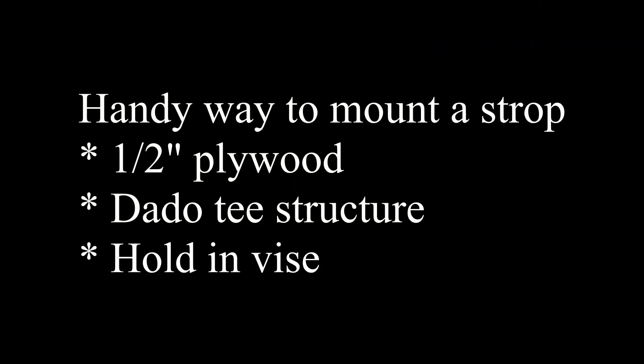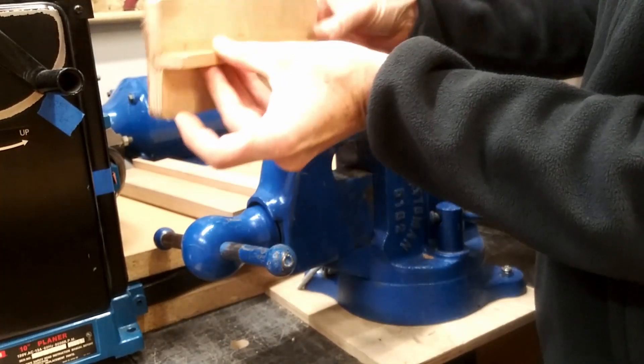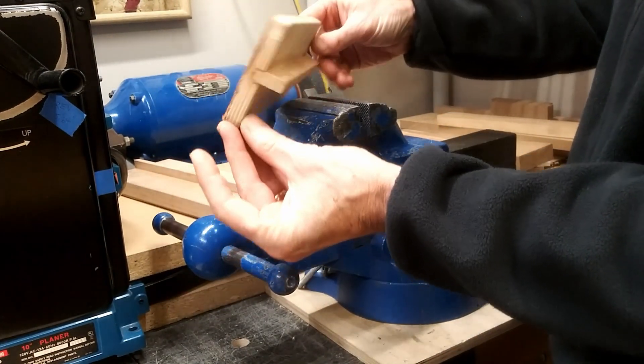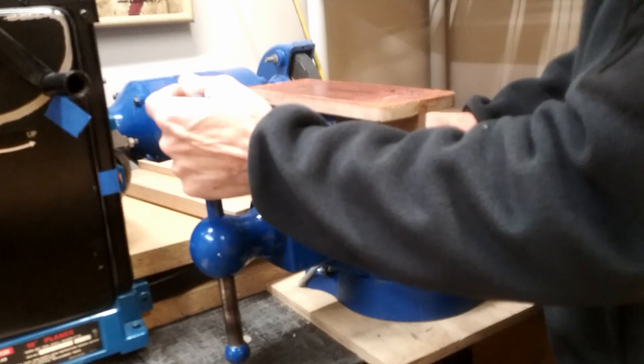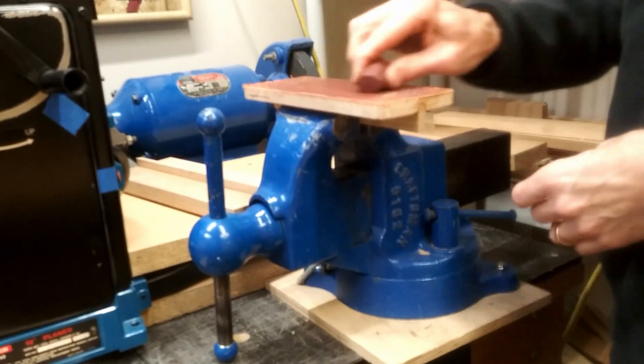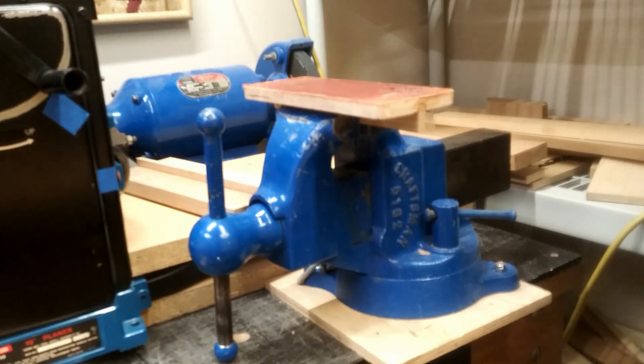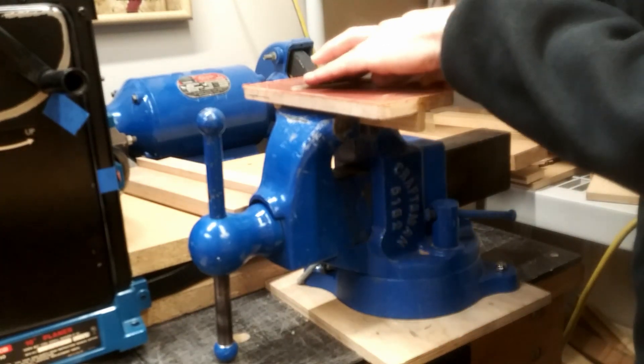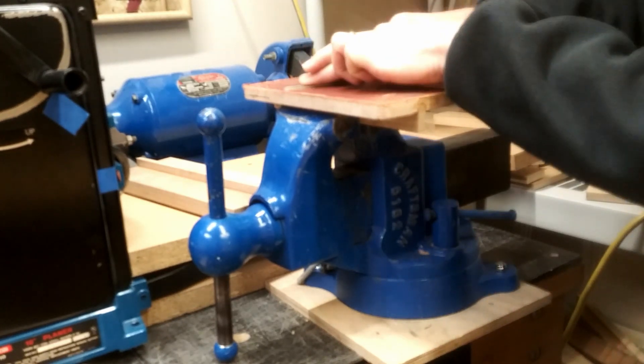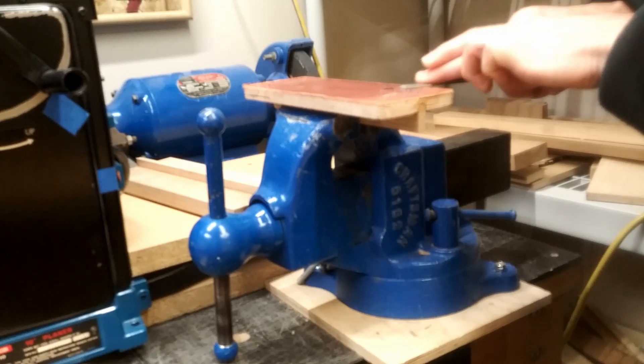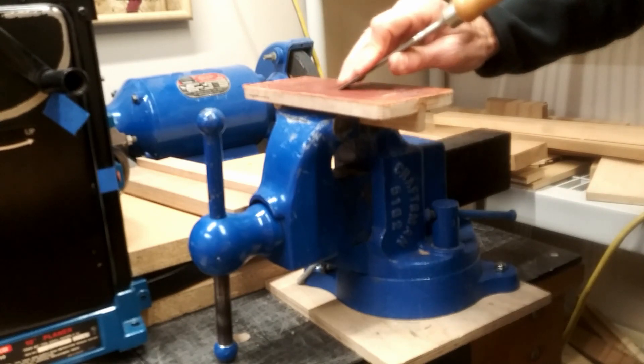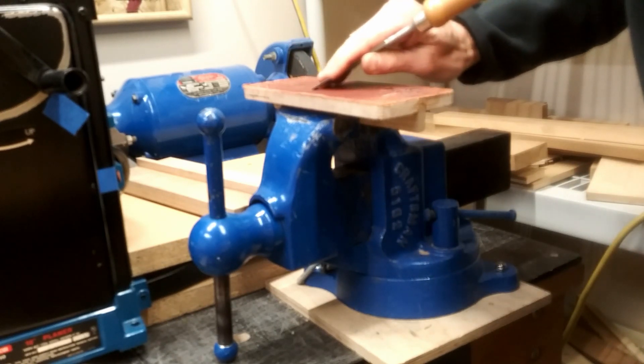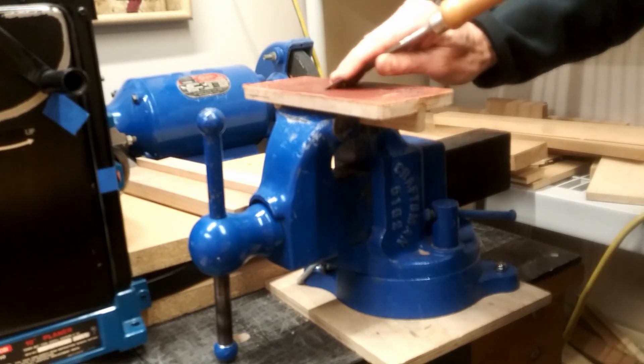Now to keep my chisels very sharp, I found a handy way that I could mount a strop. I glued a piece of leather onto a half inch piece of plywood with a dado, made a kind of a T-structure. I just leave that in my vise and whenever I want to touch up my chisels, I can do the backside. I do a lot more on the backside because you don't want to roll that edge over. I will set it on the angle and very carefully pull forward, usually only have to do five to ten times and I get a pretty nice edge back on there as long as I do this regularly.